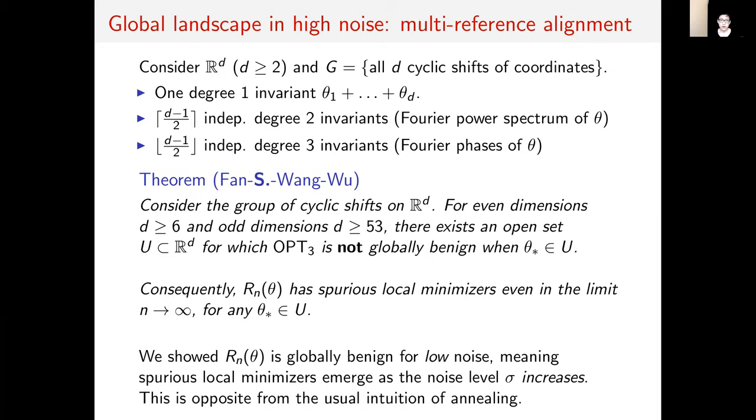Finally, let's consider the problem of multi-reference alignment, which is very closely related in algebraic structure to cryo-EM. In this setting, the group is cyclic shifts of coordinates of an unknown vector in R^d. Algebraically, there's one degree 1 invariant, with the other invariants being split roughly equally between degrees 2 and 3.